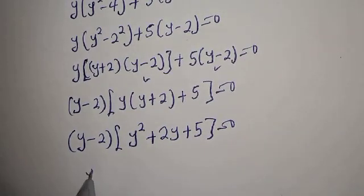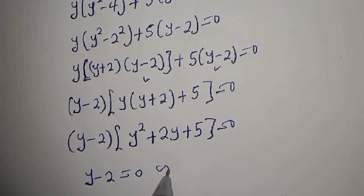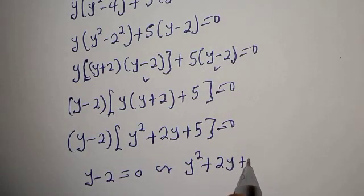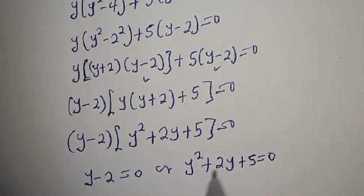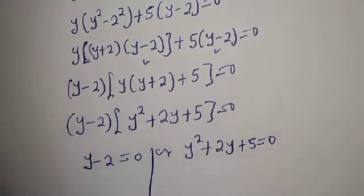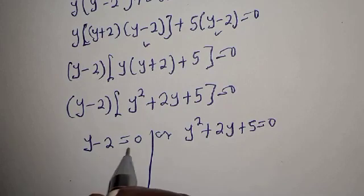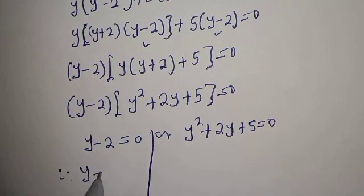The first case is y minus 2 is equal to 0, or y squared plus 2y plus 5 is equal to 0. And from y minus 2 is equal to 0, therefore y is equal to 2.